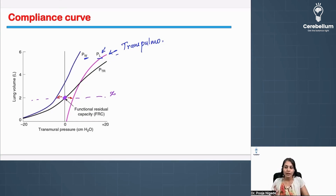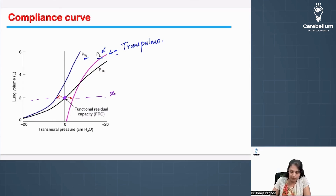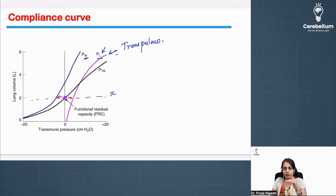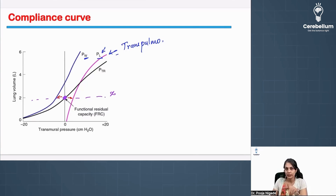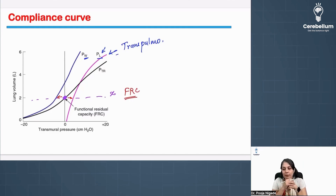What is that volume? This is the point after the normal expiration. After the normal expiration, when I stop there, no muscle is contracting — all the muscles are relaxing. When I calculate the pressure over there, this is nothing but the point where I'm going to get my FRC.